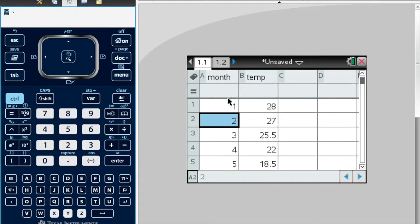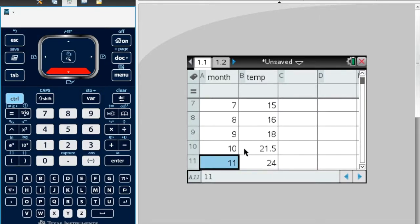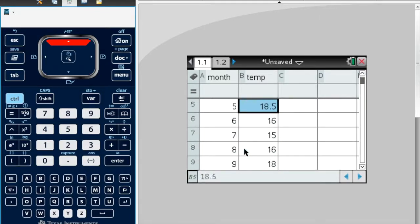I've entered the data into my Excel spreadsheet, using just numbers for the month, 1 to 12, and then I've put their corresponding temperatures in.